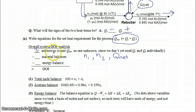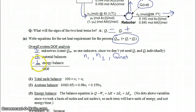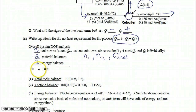We have two material balances — acetic acid and acetone — and then also we have one energy balance. You can only ever write one energy balance; you can't write an energy balance for acetone and a separate one for acetic acid. So we have zero degrees of freedom.